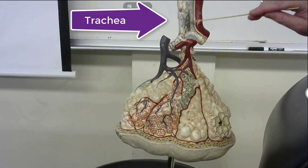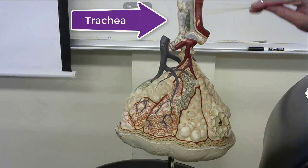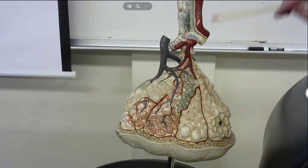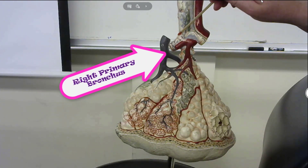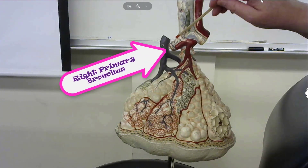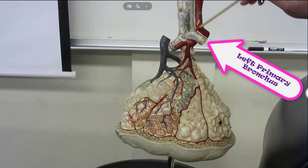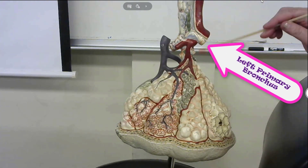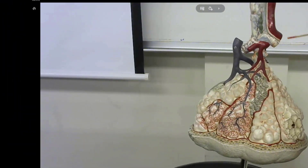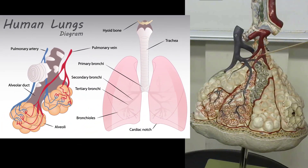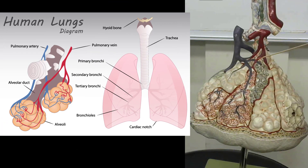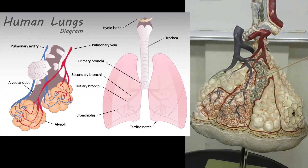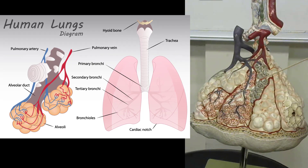Here is our trachea, which is covered with cartilaginous rings. The trachea bifurcates to form the right primary bronchus and the left primary bronchus — these are the primary bronchi. These branch again to form the secondary and tertiary bronchi, which continue to branch into smaller airways called bronchioles.